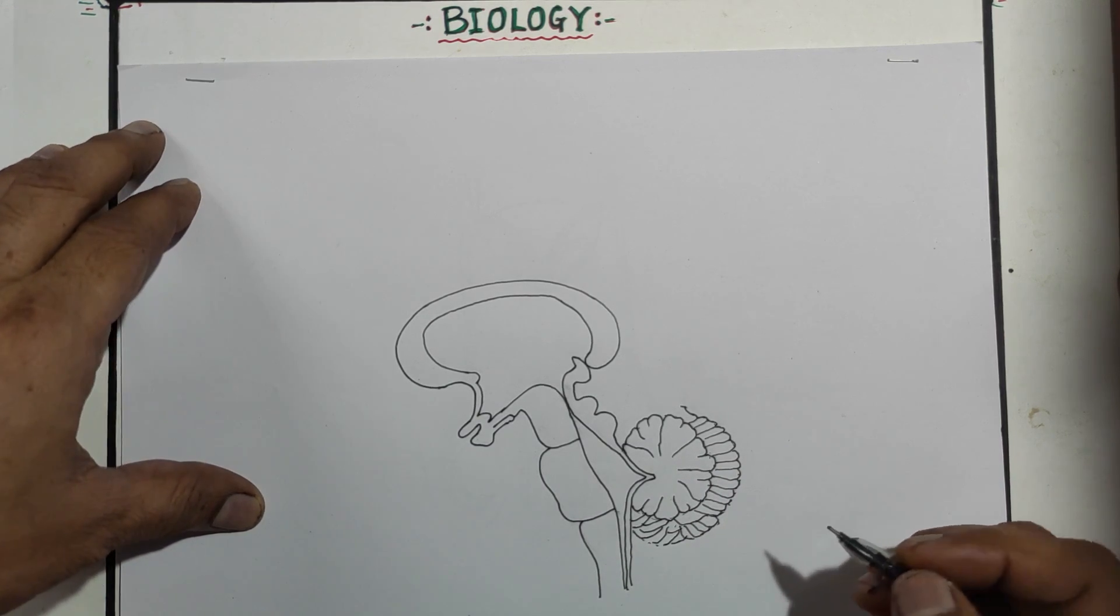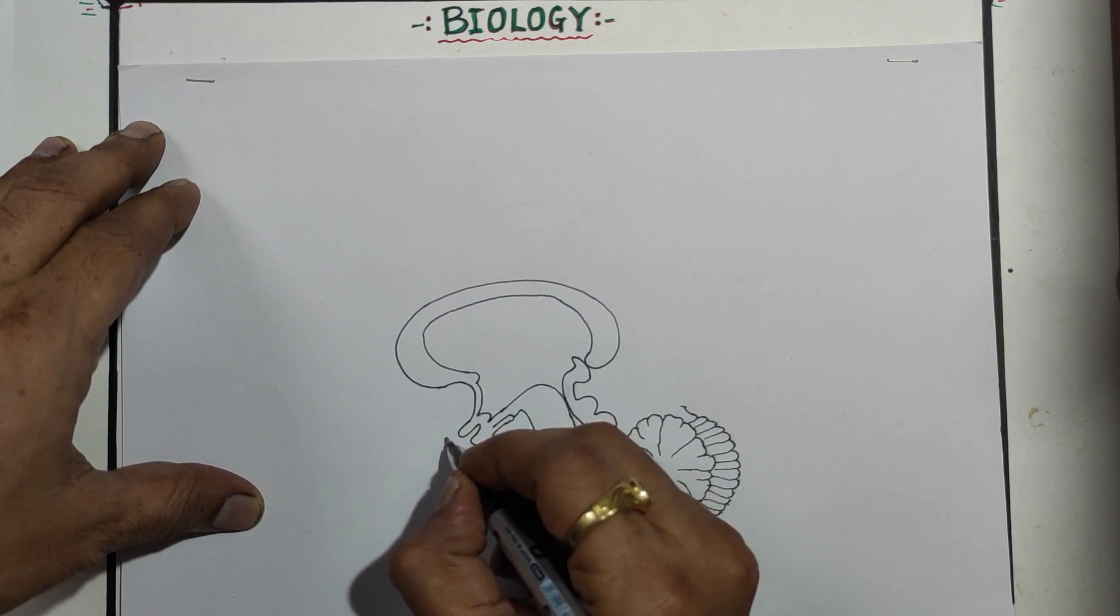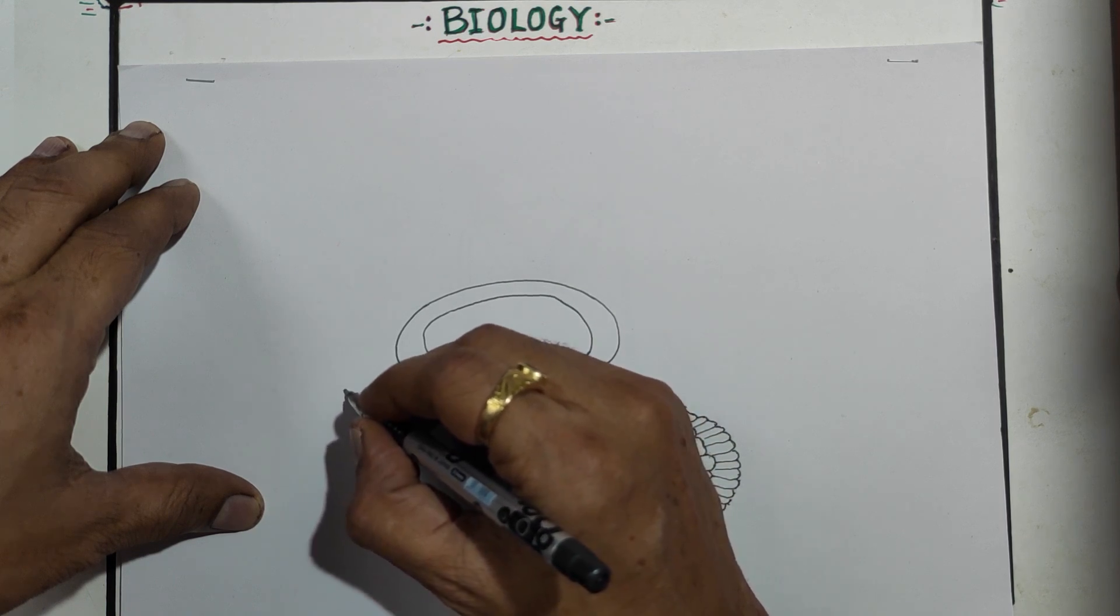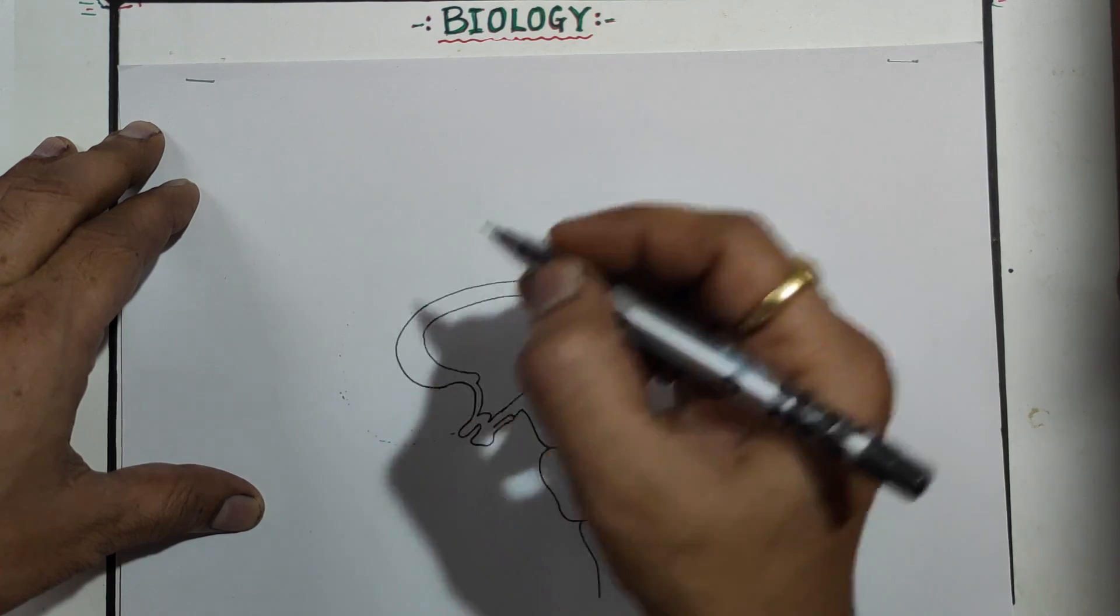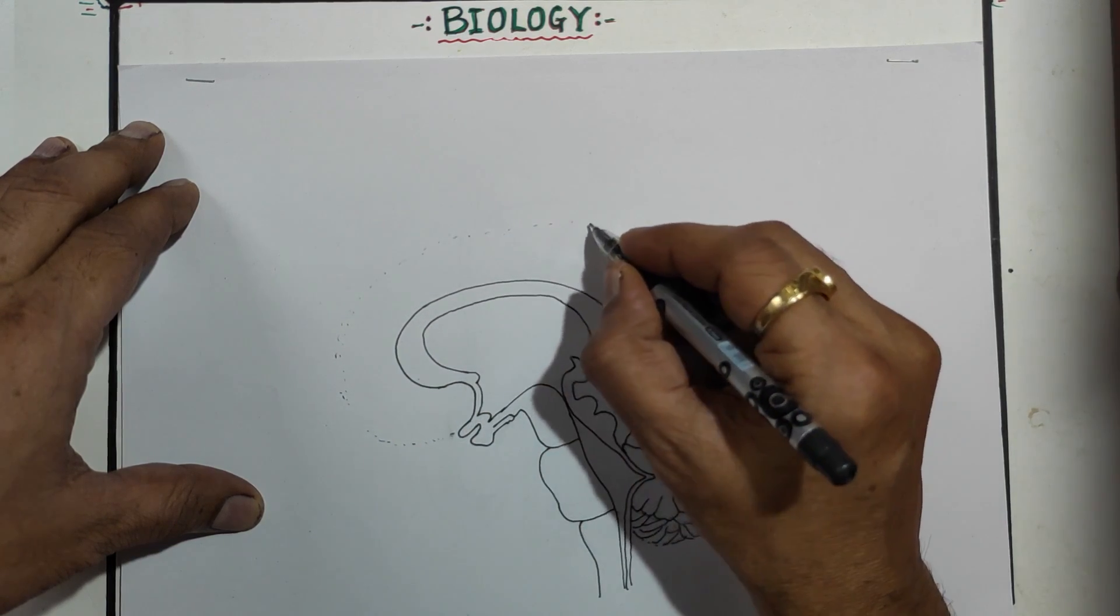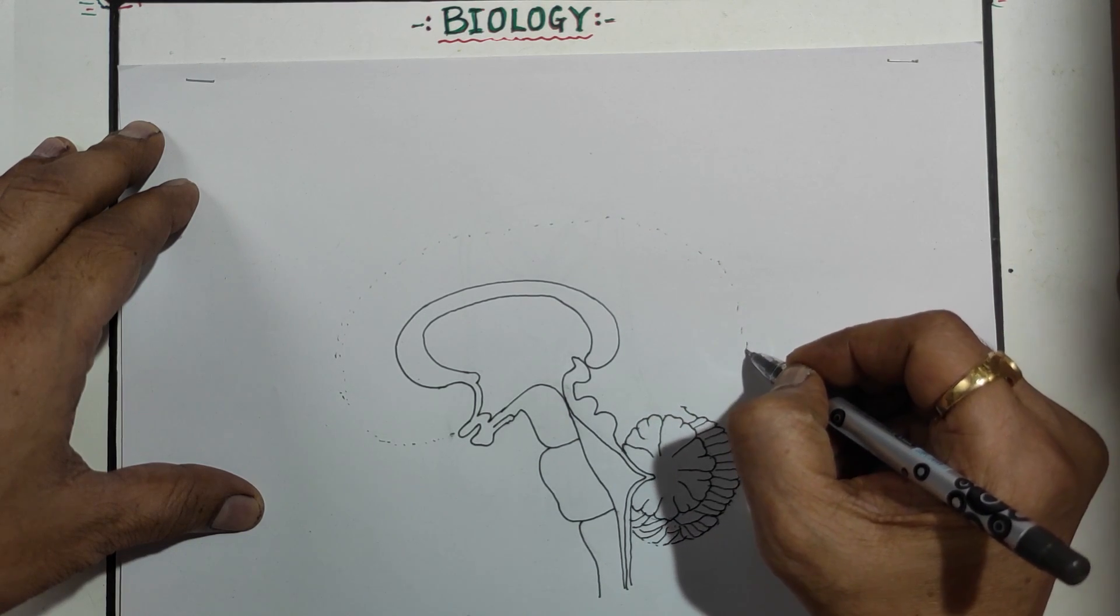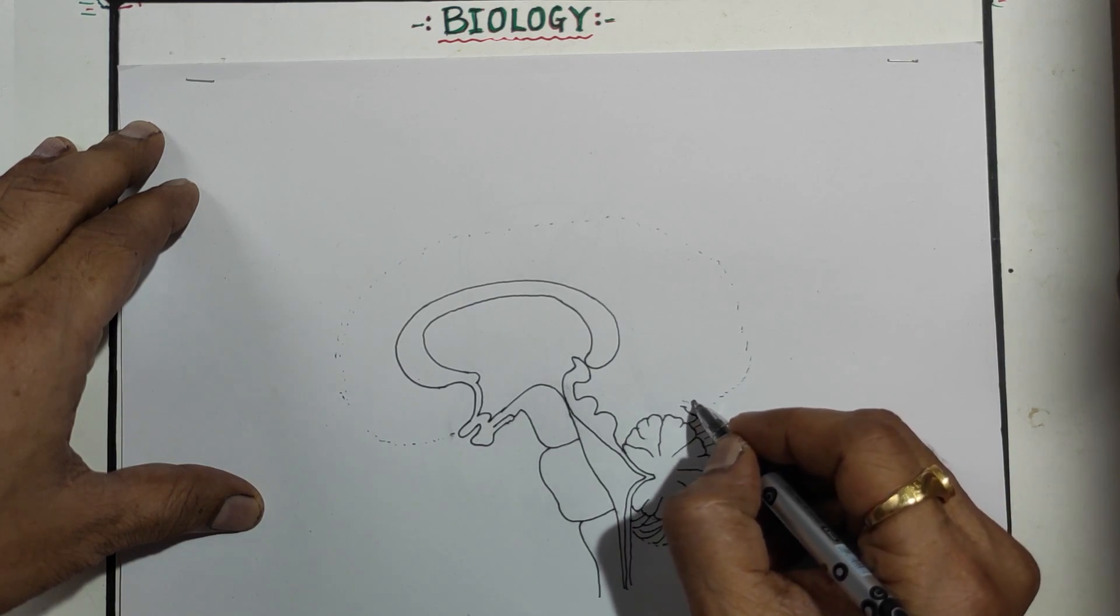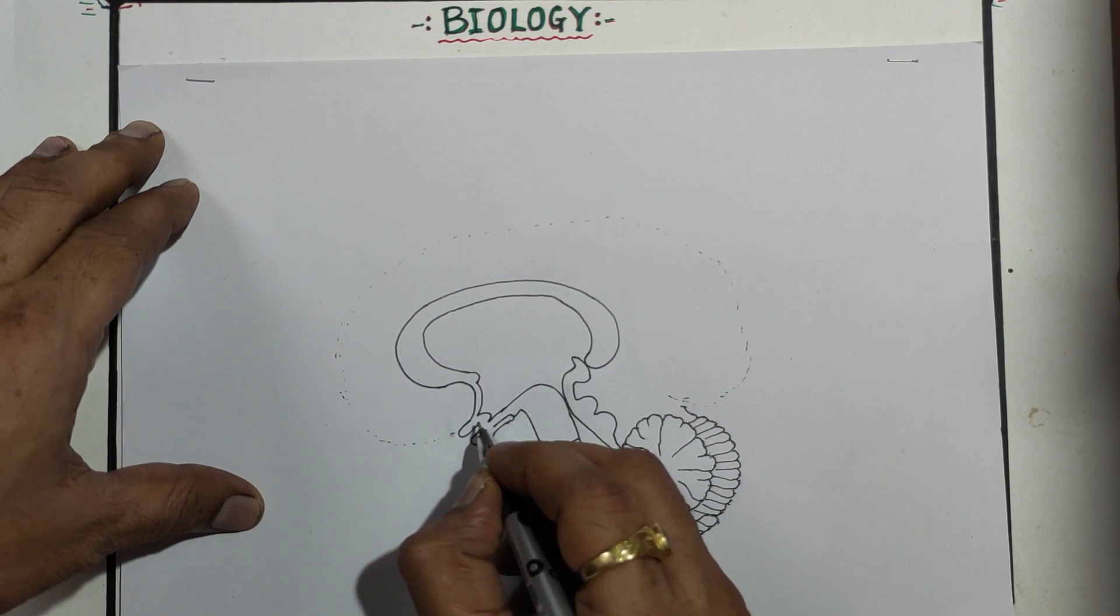So this is a cerebellum. So this is the cerebellum. This line you have to continue, so make the first border with the dotted line to draw the cerebrum. And then bring it down toward the cerebrum. So from here we will start.